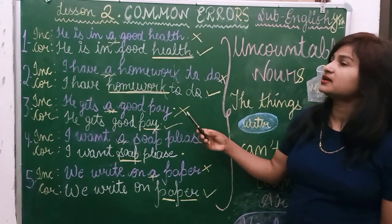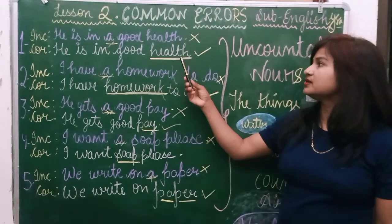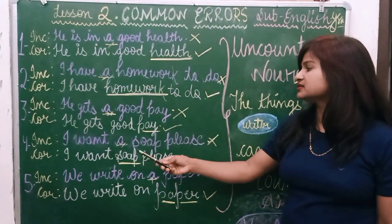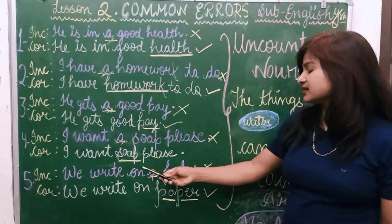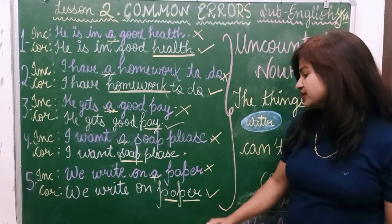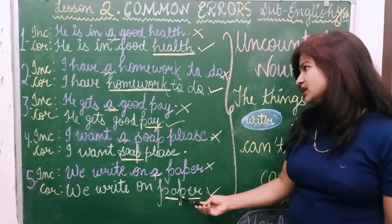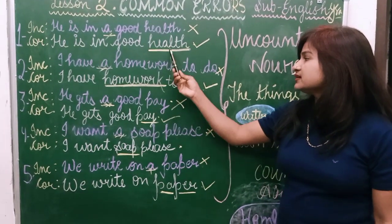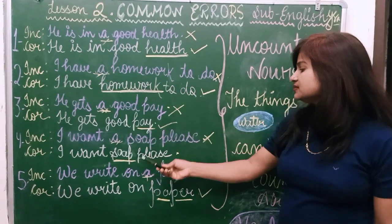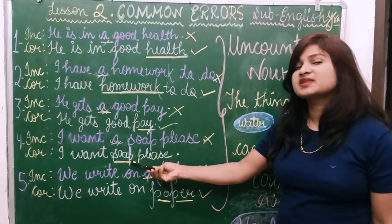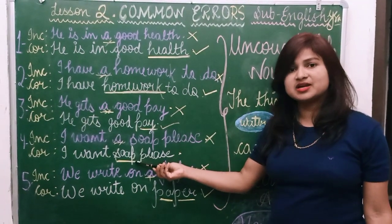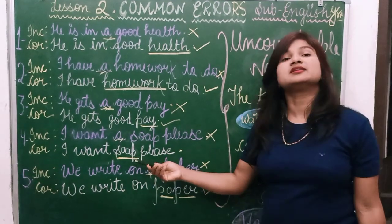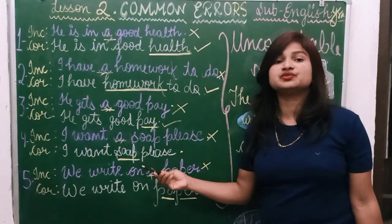I wish to elaborate and explain: Health, Homework, Pay, Soap, and Paper — these are all highlighted words pertaining to Uncountable Nouns. I hope this is clear. This is very useful for you.